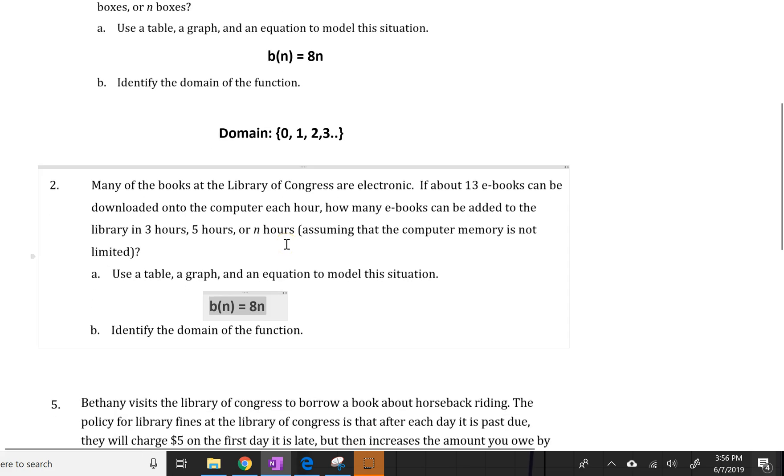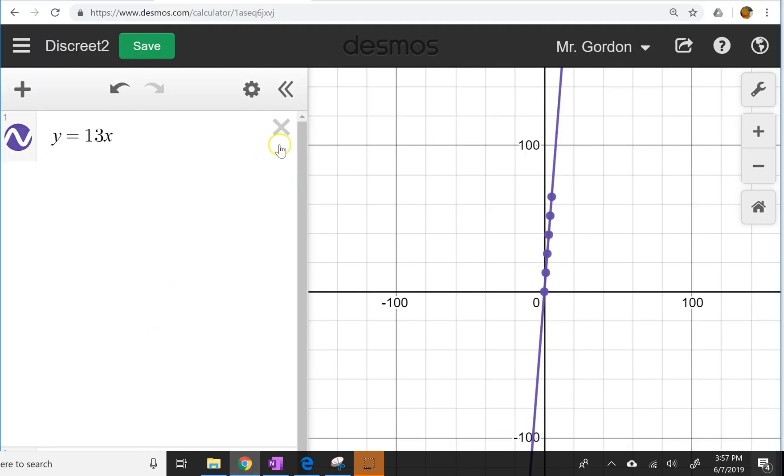So in scenario two, we're now looking at e-books. It says 13 e-books can be downloaded onto the computer each hour. We want to know how many e-books can be added to the library in three hours, five hours, or n hours. So I'm going to start with an equation again. Instead of b of n, I'll use e of n for e-books. And now n is representing the number of hours instead of the number of boxes. And so it's going to be 13n because we can add 13 e-books per hour.